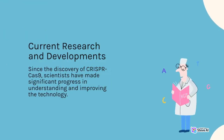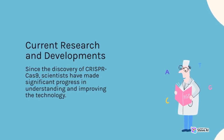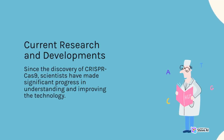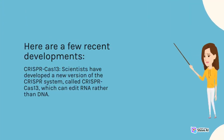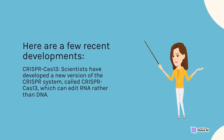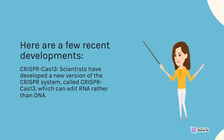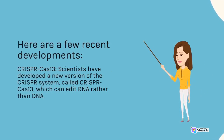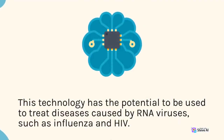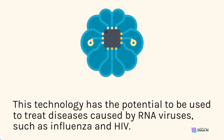Since the discovery of CRISPR-Cas9, scientists have made significant progress in understanding and improving the technology. Scientists have developed a new version of the CRISPR system, called CRISPR-Cas13, which can edit RNA rather than DNA. This technology has the potential to be used to treat diseases caused by RNA viruses, such as influenza and HIV.